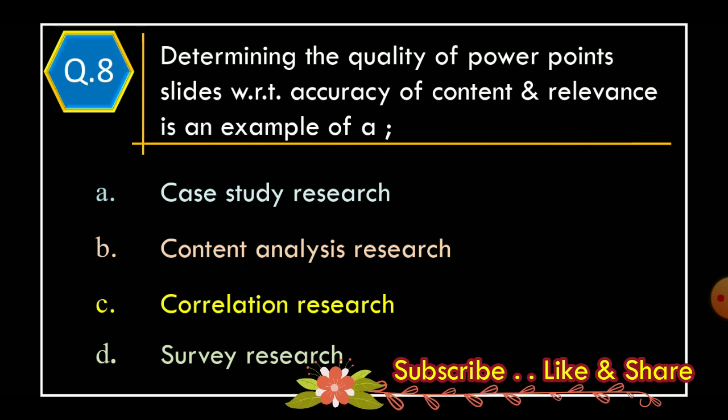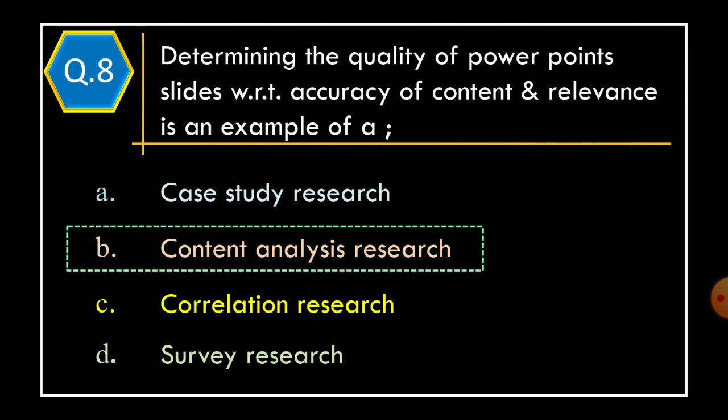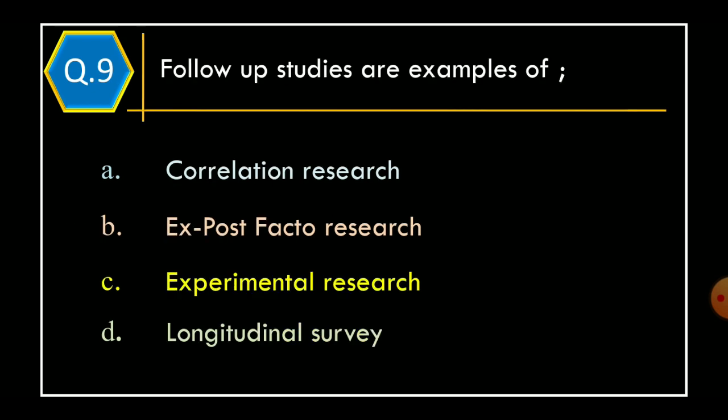Question 8: determining the quality of PowerPoint slides with respect to accuracy of content and relevance is an example of — Option A: case study research; Option B: content analysis research; Option C: correlation research; Option D: survey research. The correct option is Option B: content analysis research.